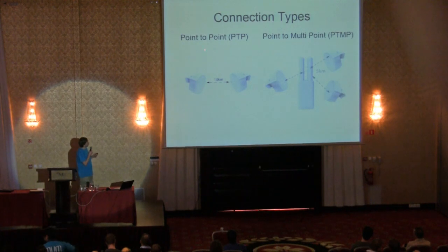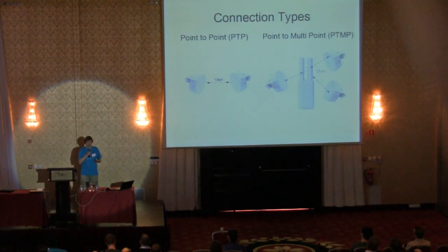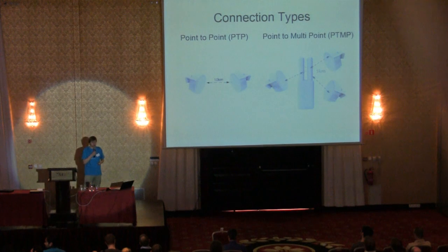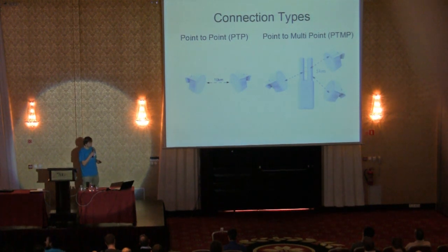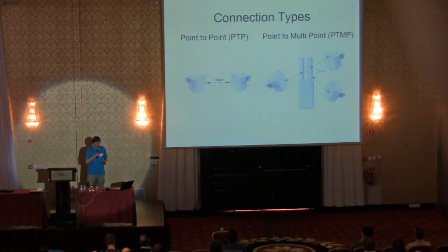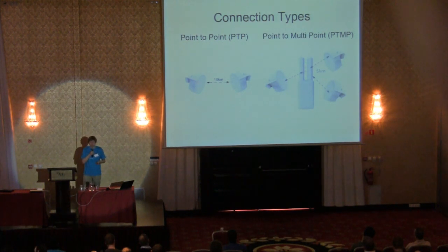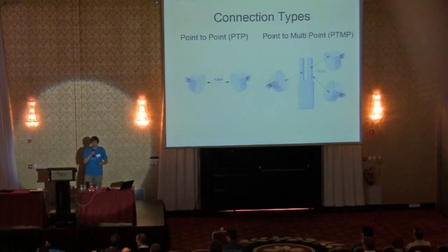We have point-to-point links — for example, two antennas: one antenna on one tower, another antenna on a different tower in another town, to make a wireless link of 10 kilometers. For example, here are two S60 devices. The other connection type is point-to-multipoint, like an AP, where you connect multiple clients to your central AP.